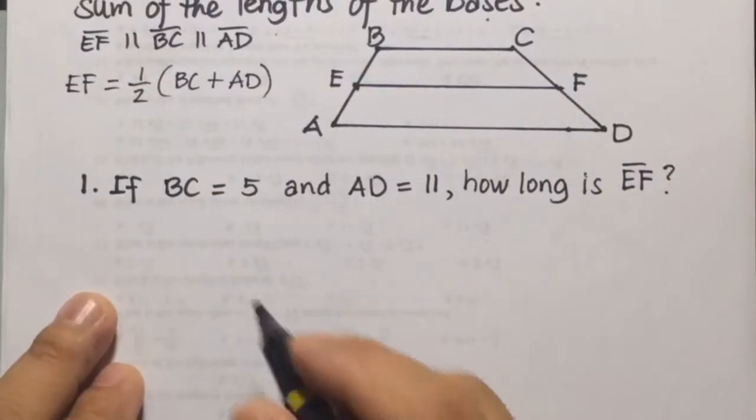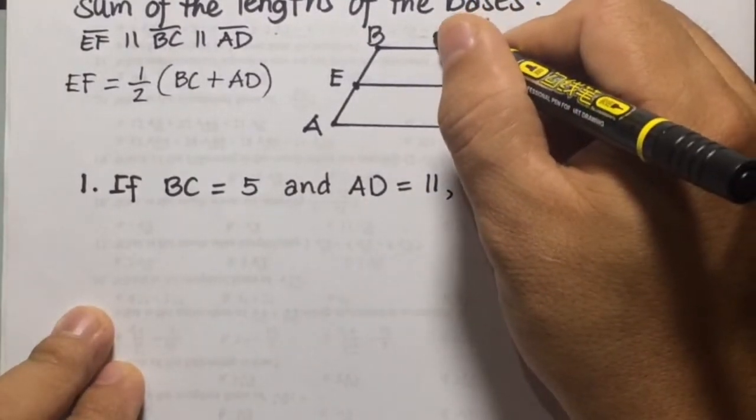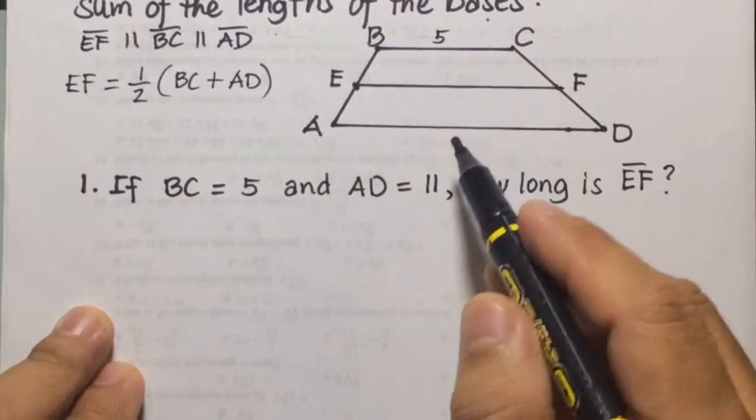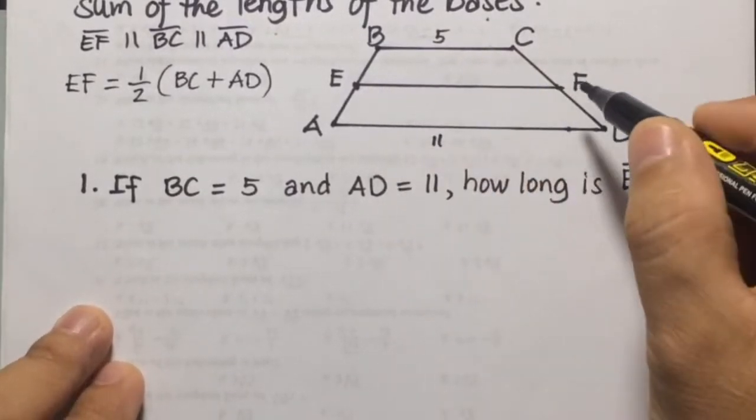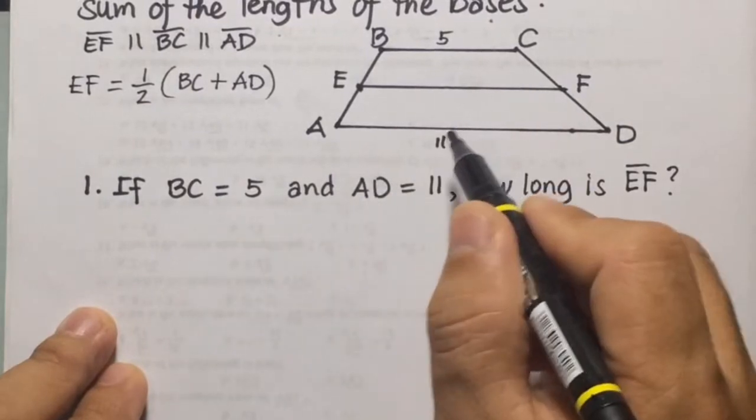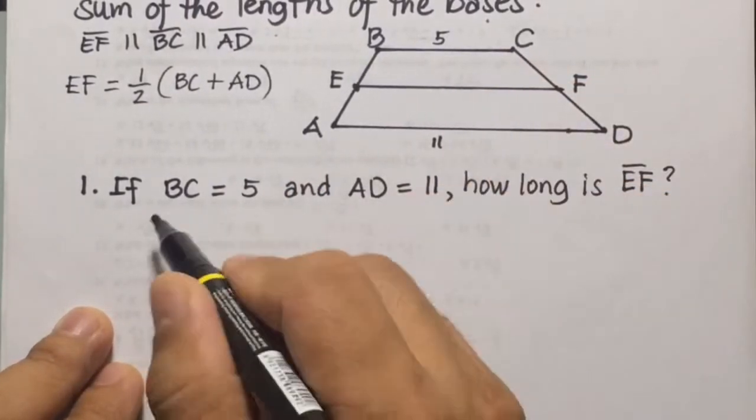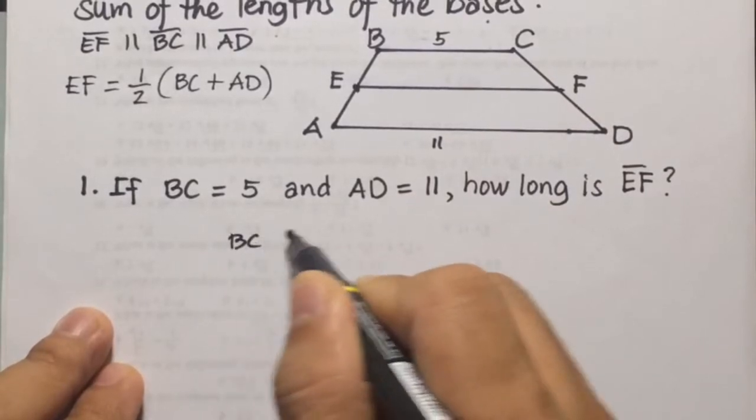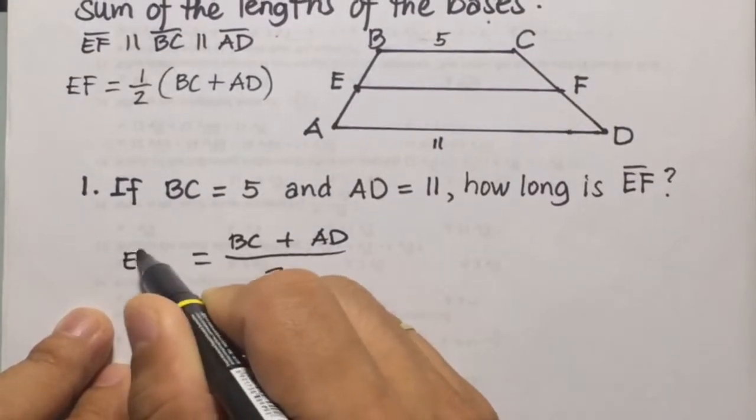So number one, if BC is equal to 5, this is 5 here, and AD is equal to 11, how long is EF? So we're going to have 5 plus 11, so BC plus AD divided by 2 will be equal to EF.